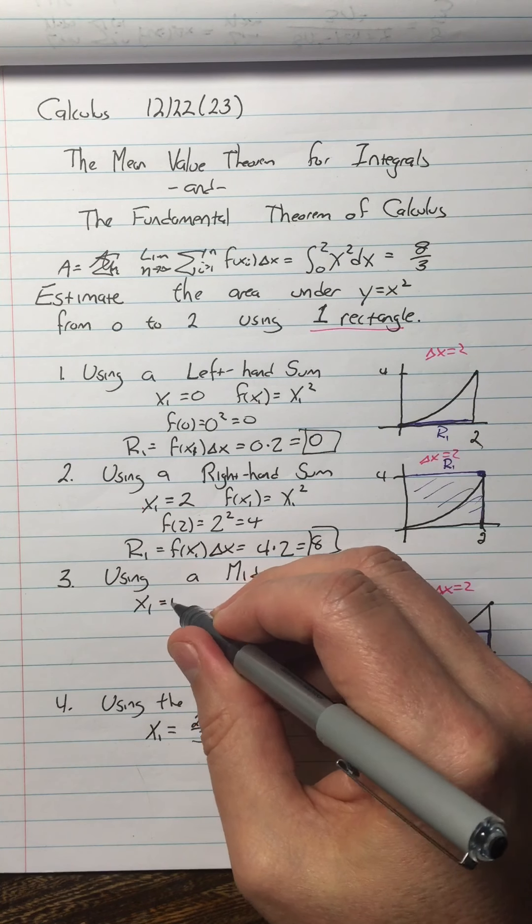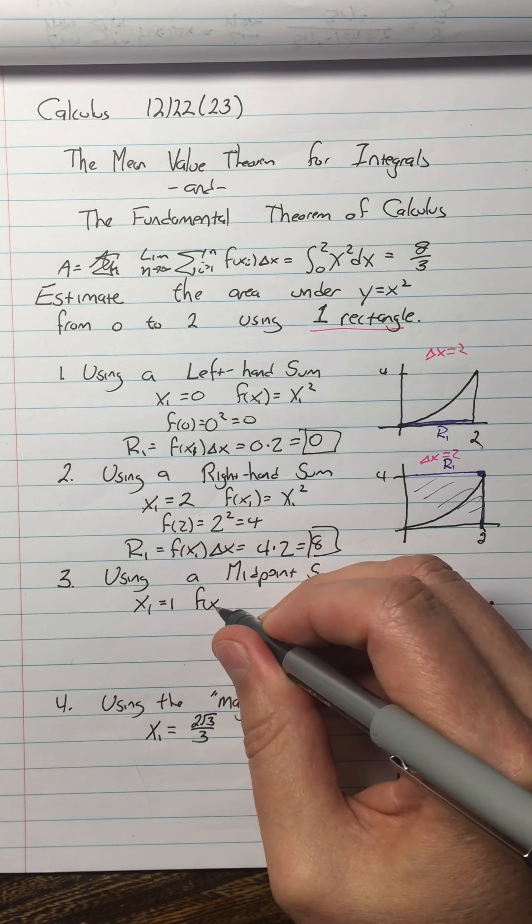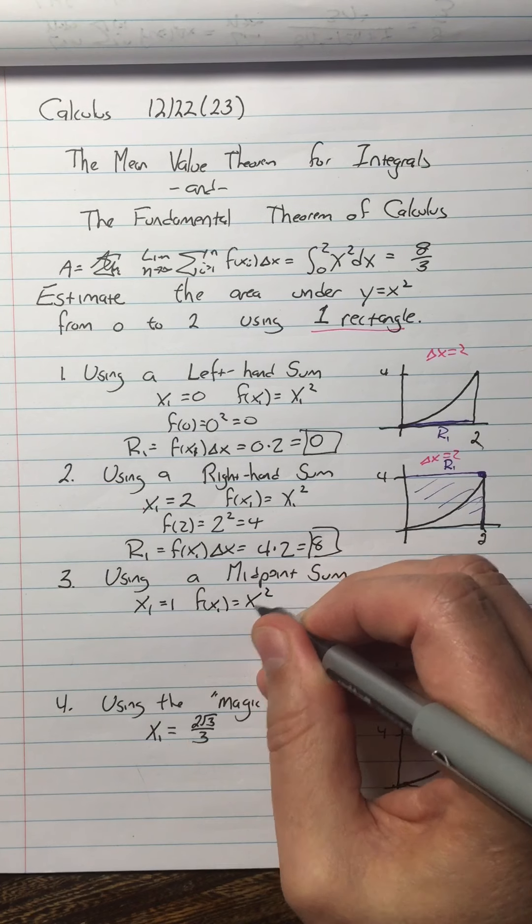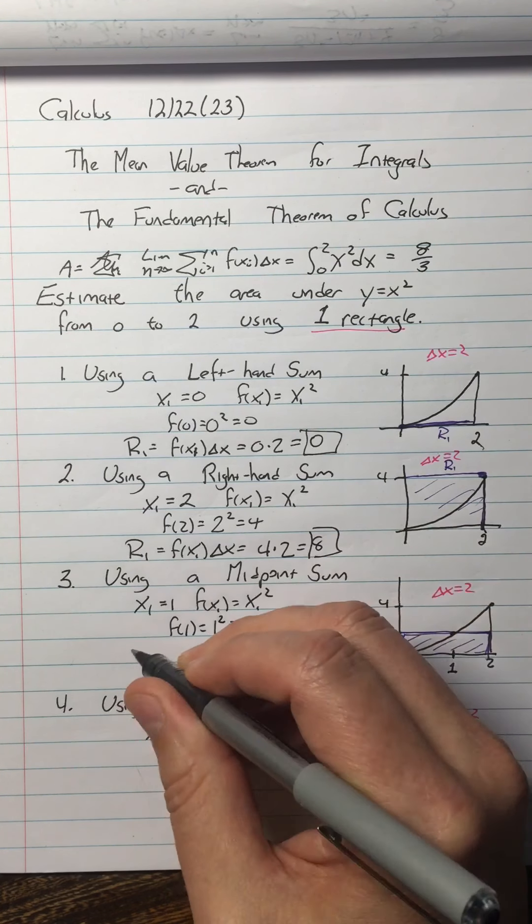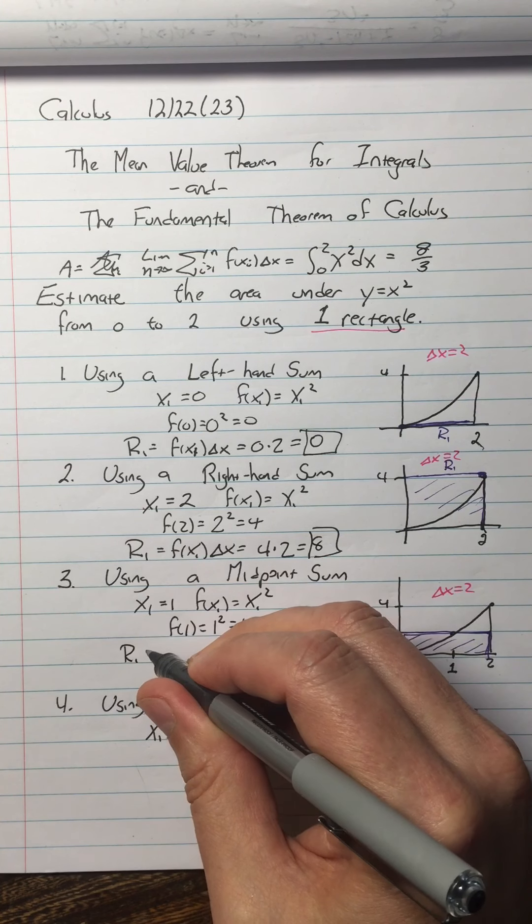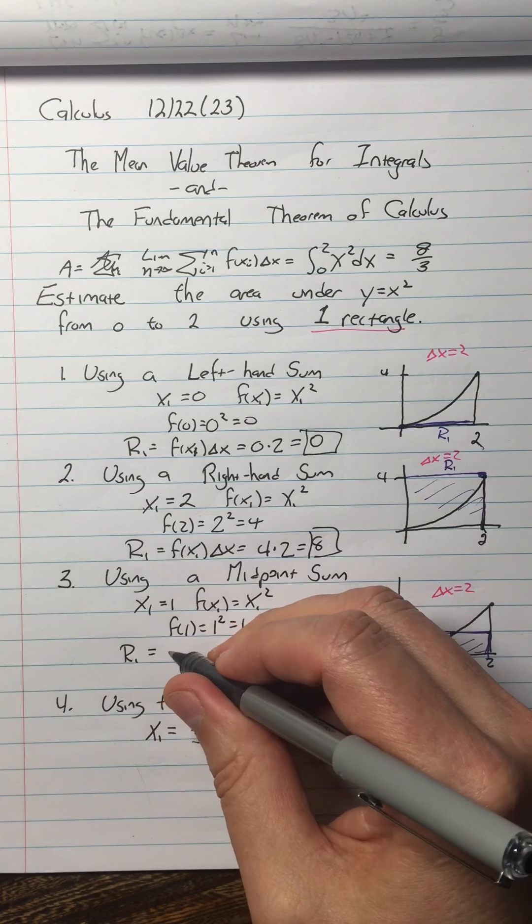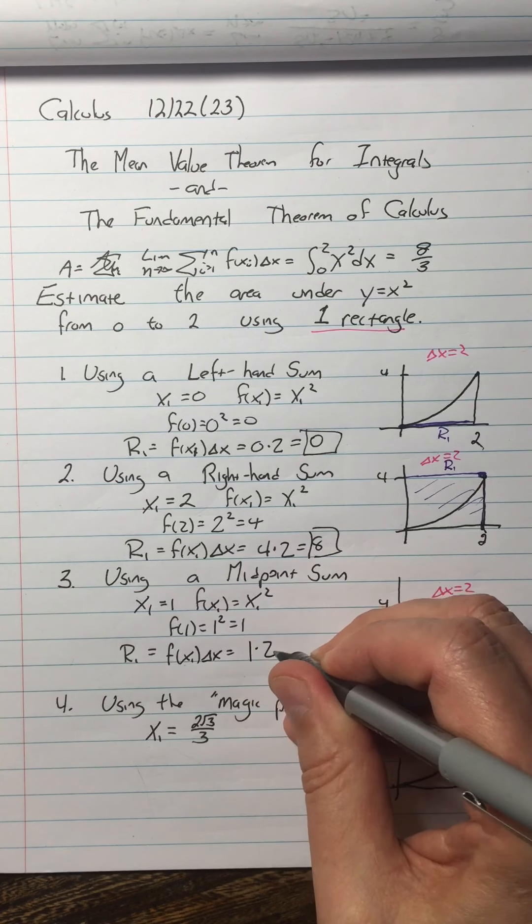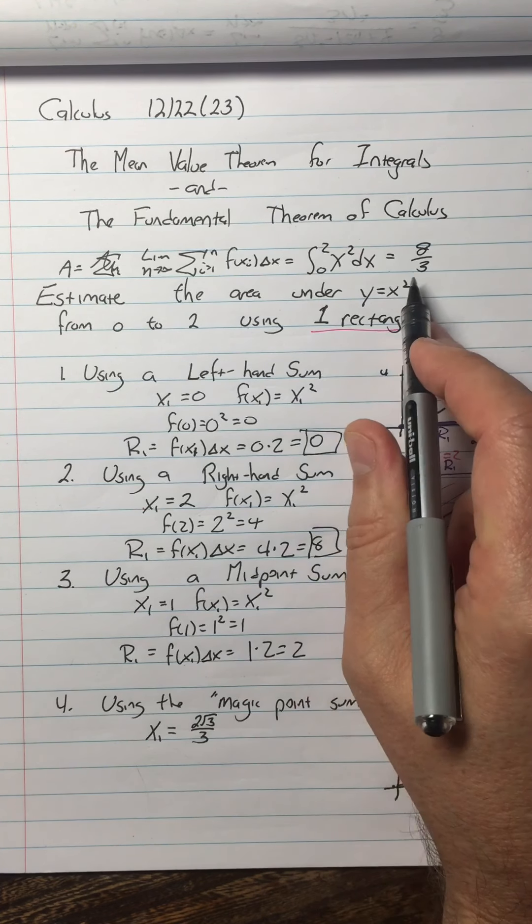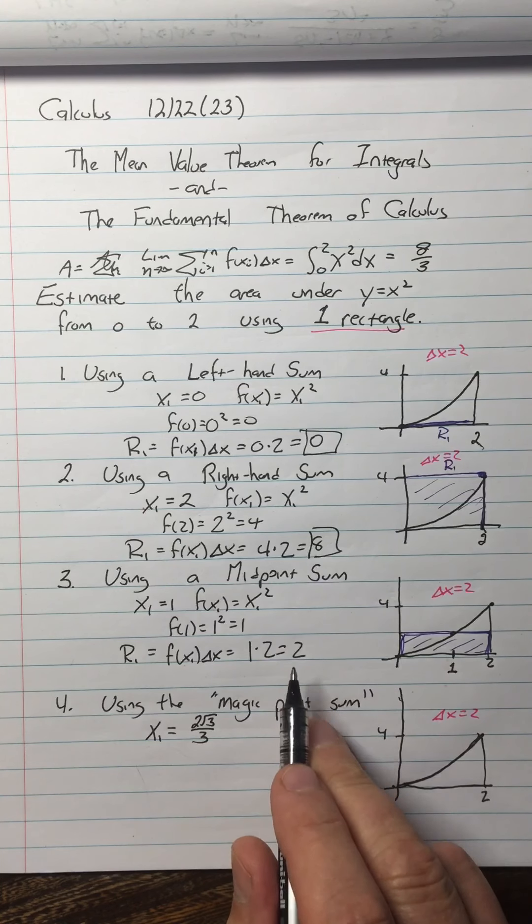So my x1 is 1. So my f of x1 being x1 squared, f1 is 1 squared, which is 1. So my area of the rectangle, which is my estimate for a single rectangle, being f of x1 times delta x is 1 times 2, which is 2. Now the actual area is 2 and 2 thirds. So clearly this is the closest one.